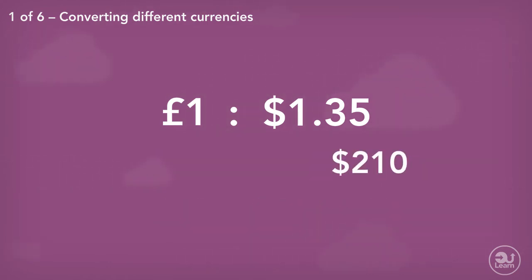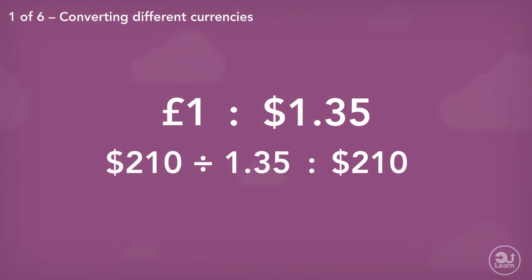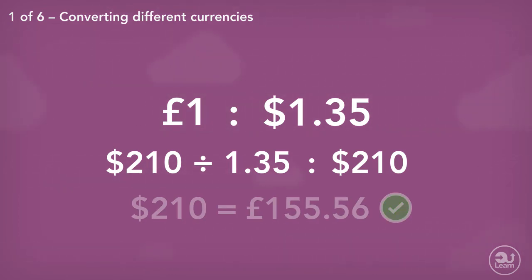Converting $210 to pounds: we know every $1.35 is equal to £1. We can see how many times $1.35 fits into $210 by dividing $210 by $1.35. By doing this, we end up with 155.5 recurring. This means that $210 is approximately £155.56.